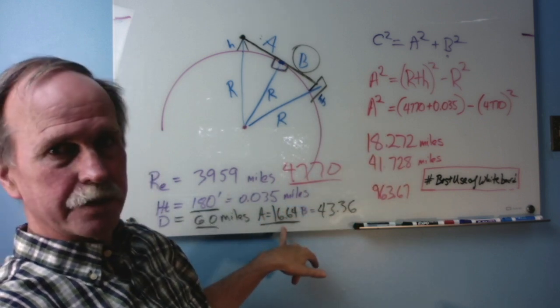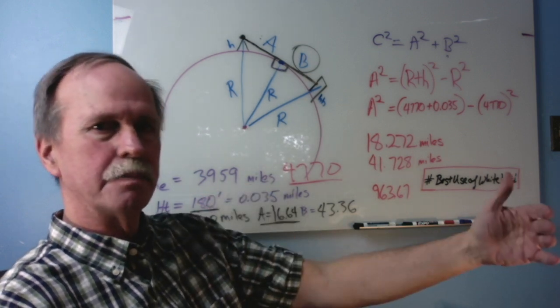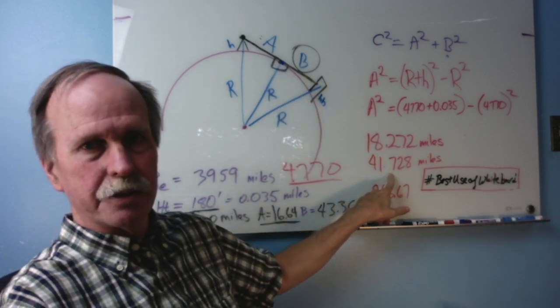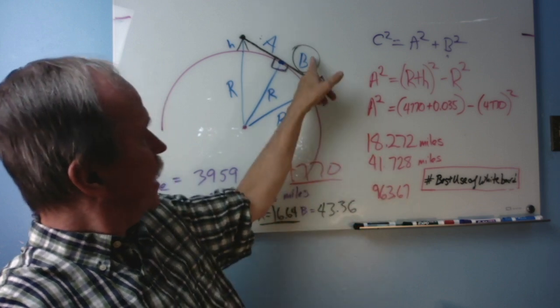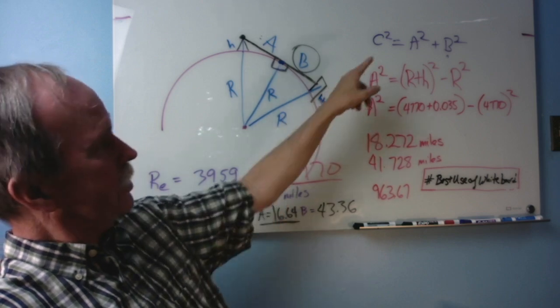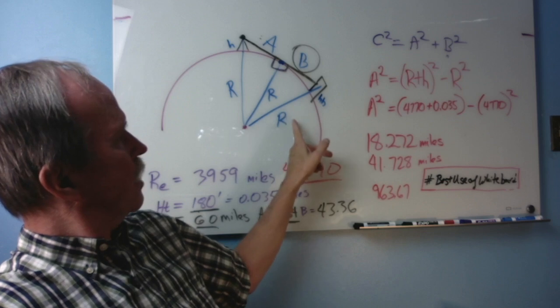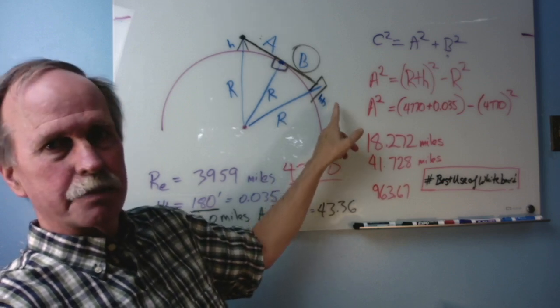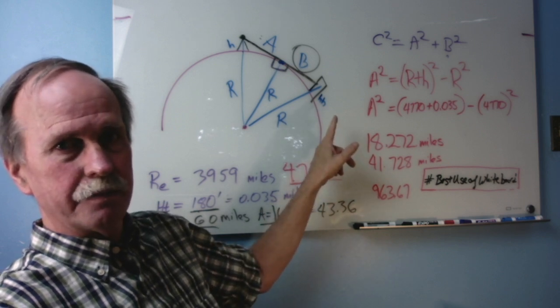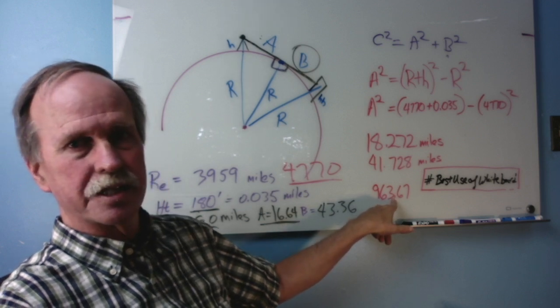That's up a little bit from the 16.64 because refraction causes the horizon to move outward. Now, the balance of the 60 miles is 41.728. Using that as side B for the triangle, we go ahead and calculate it through using the Pythagorean theorem as we did last time. And what we do is we come up with the radius plus the hidden height. Subtracting 4770 from that value, we get the hidden amount. And that works out to 963.67 feet.